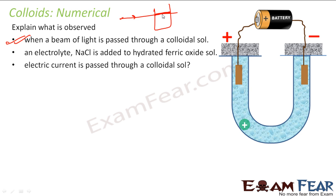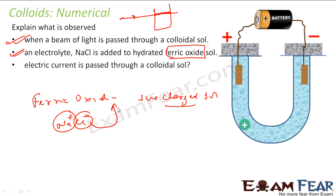The next is: when an electrolyte NaCl is added to hydrated ferric oxide sol. So ferric oxide sol is a positive charge sol. Now if I add NaCl - NaCl is a strong electrolyte, it will give Na plus and Cl minus ions. So this is a positive charge sol, the Cl minus will be adsorbed on this ferric oxide because ferric oxide is a positive charge sol, it will attract the negative charge electrolyte.